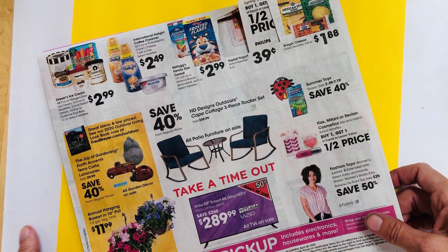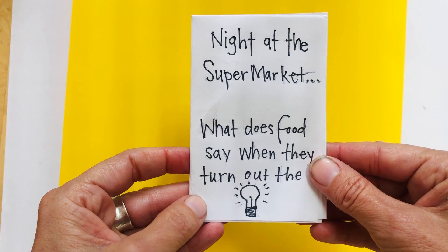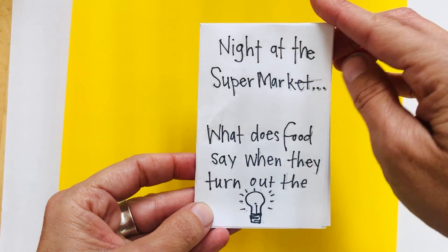I used the pictures from the mailers that come and I cut pieces out to tell a story about my zine. This one's called Night at the Supermarket. What does food say when they turn out the light?